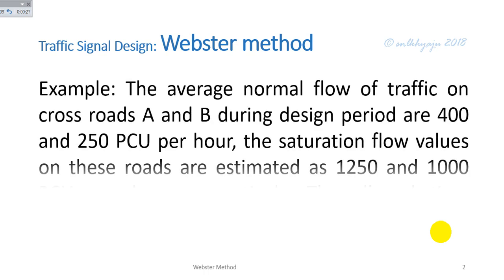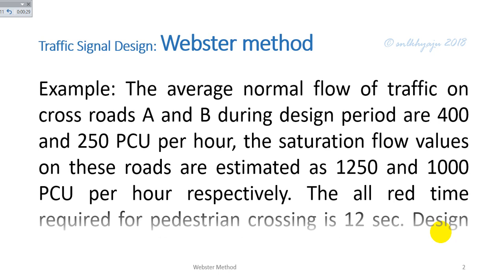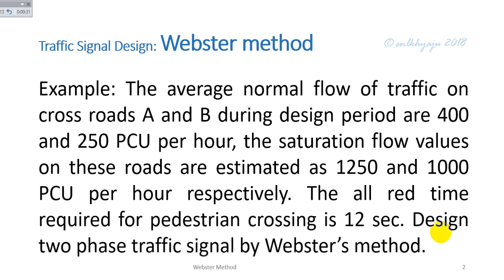The average normal flow of traffic on crossroads A and B during design period are 400 and 250 PCU per hour. The saturated flow values on these roads are estimated as 1250 and 1000 PCU per hour respectively.